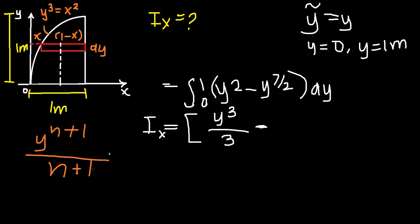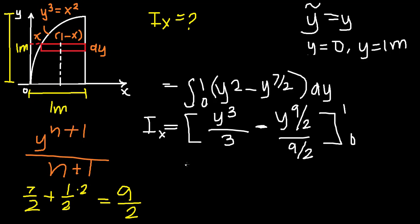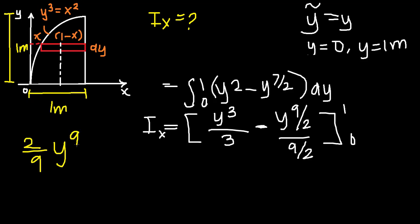7/2 plus 1 is 7/2 plus 2/2, which is 9/2. So we got y^(9/2) over 9/2. For this 9/2, you can simply have it as a reciprocal. Another way of writing that is 2/9 times y^(9/2). So we got y³/3 minus 2/9 y^(9/2), evaluated from 0 to 1.